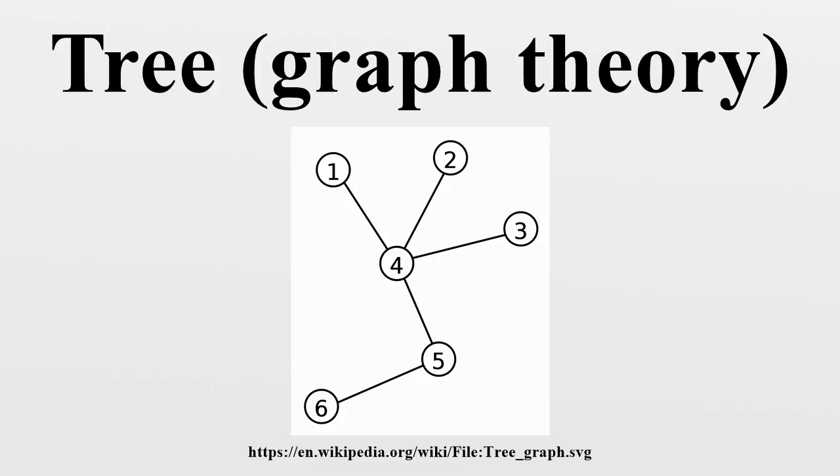A directed tree is a directed graph which would be a tree if the directions on the edges were ignored, i.e., a polytree. Some authors restrict the phrase to the case where the edges are all directed towards a particular vertex, or all directed away from a particular vertex. A tree is called a rooted tree if one vertex has been designated the root, in which case the edges have a natural orientation, towards or away from the root.